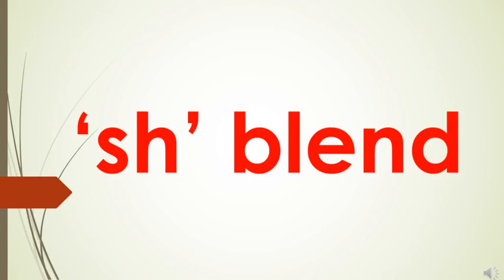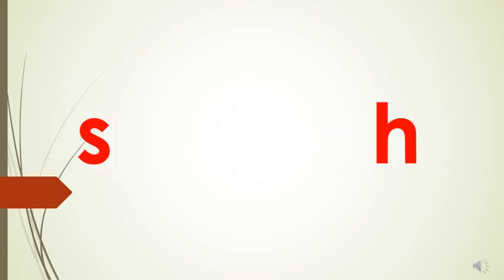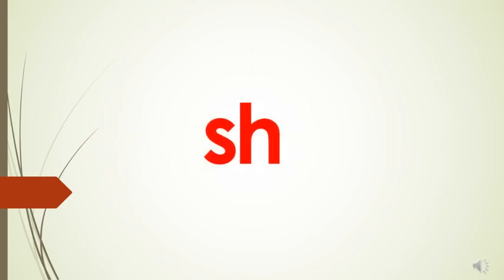S-H says 'Sh'. Today we are going to learn a few words with S-H blend, where in the beginning of those words we will find this blend. Now look at the screen to answer a few questions, and while answering we will learn words with S-H blend. You can see letter S and letter H on the screen — they have different phonic sounds, but when they are joined together they form the sound 'Sh'.